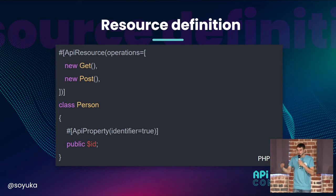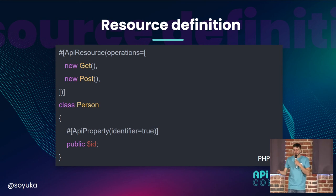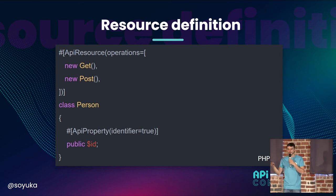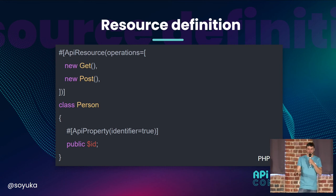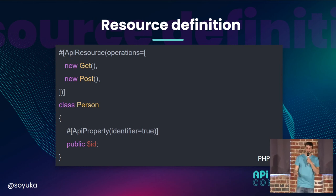Then we went a bit further and thought: how can we simplify this resource declaration? We decided to add this inside the PHP attribute, to add an array of operations. For example, you can see that this code would work only in PHP 8.1, because we are calling constructors inside the attribute.